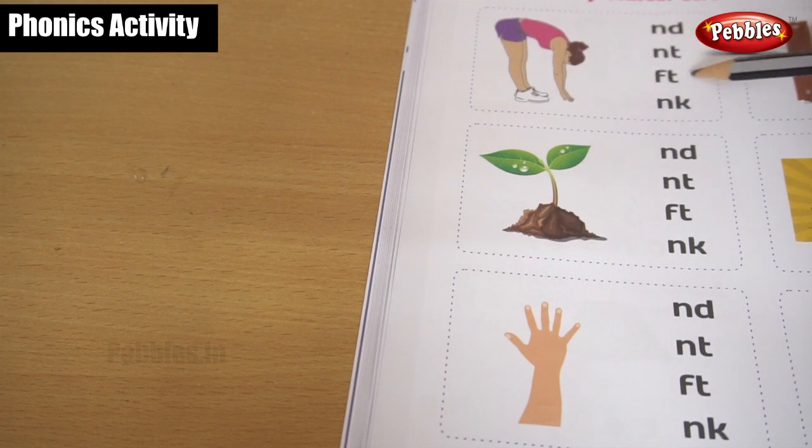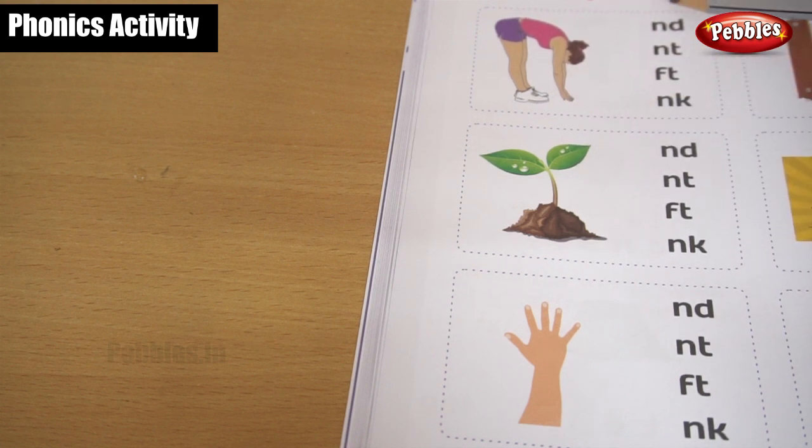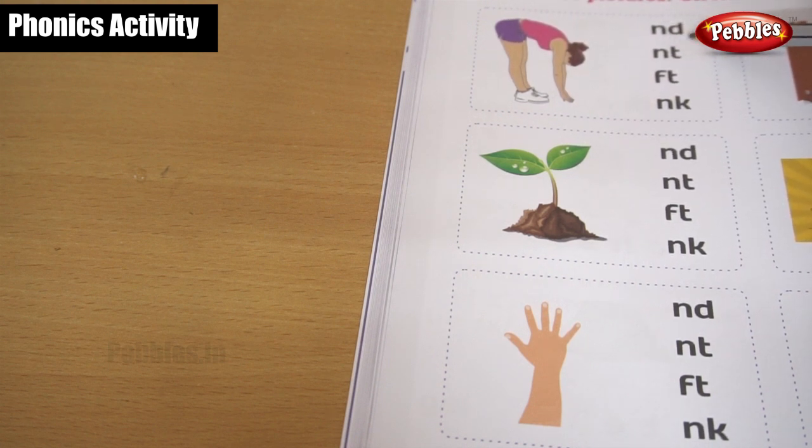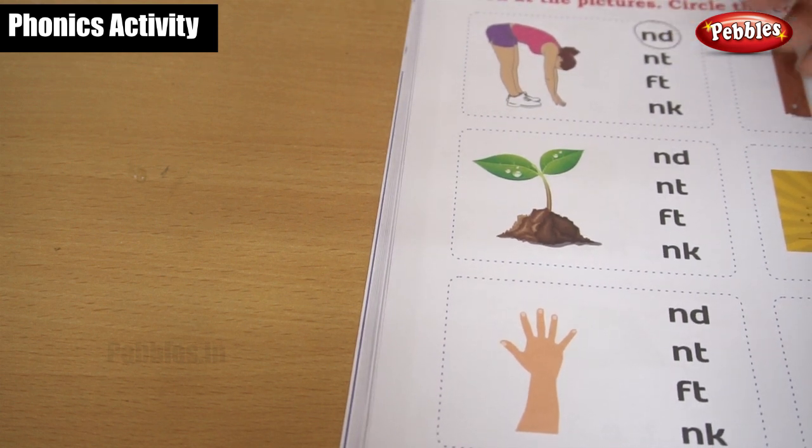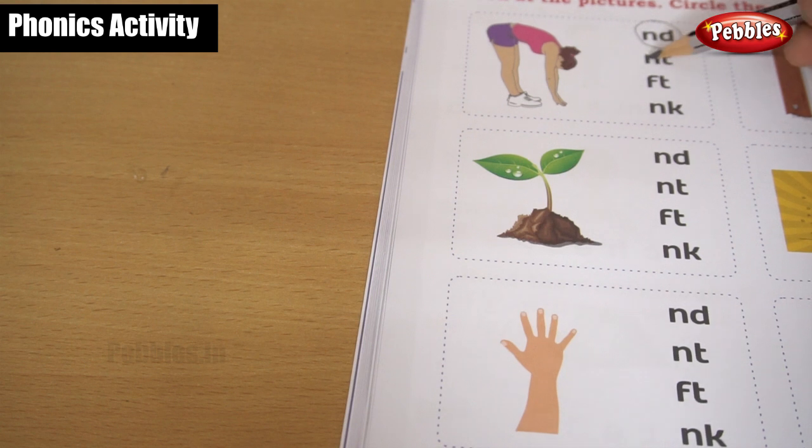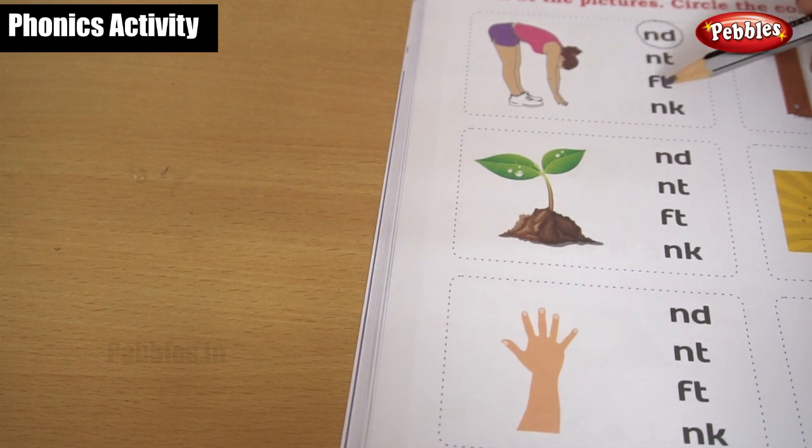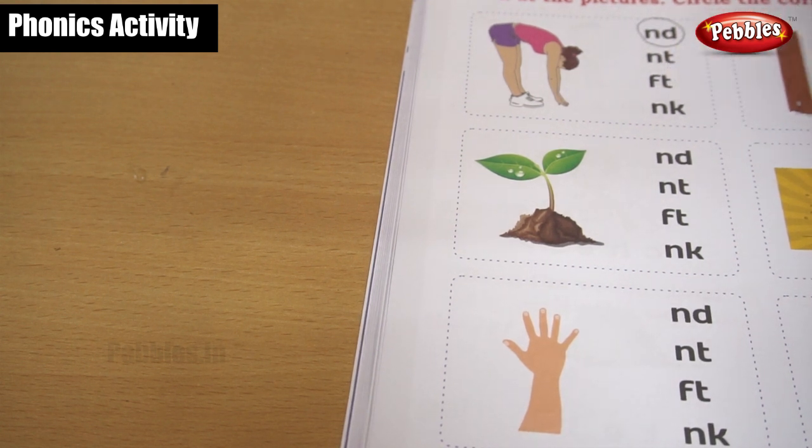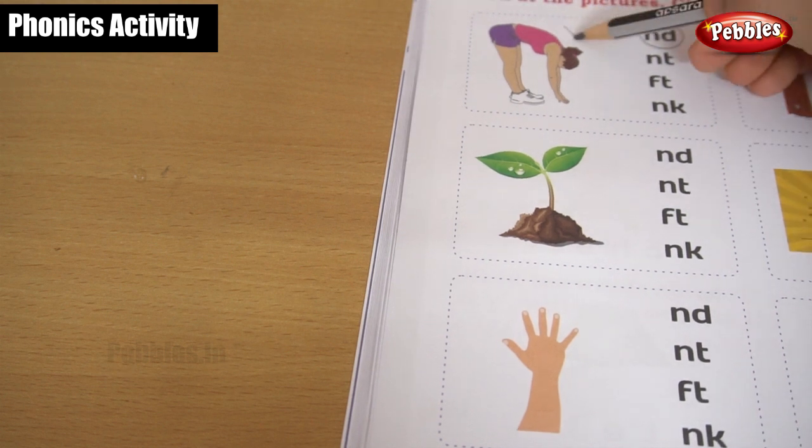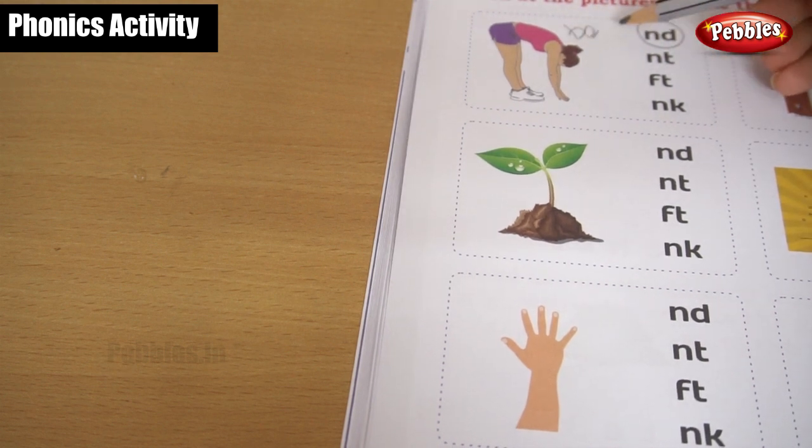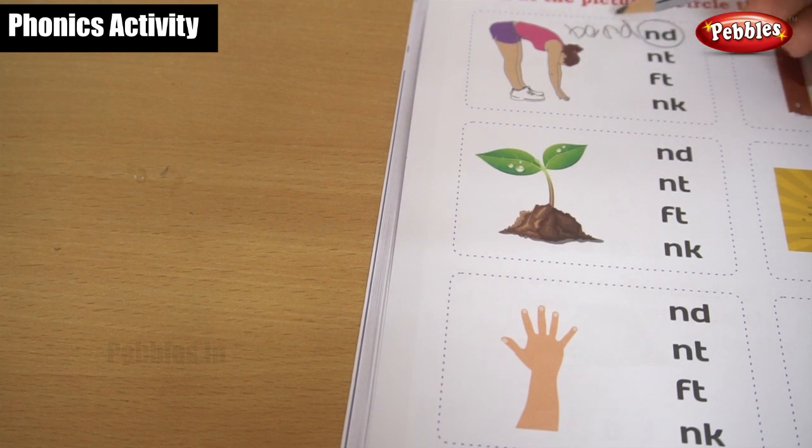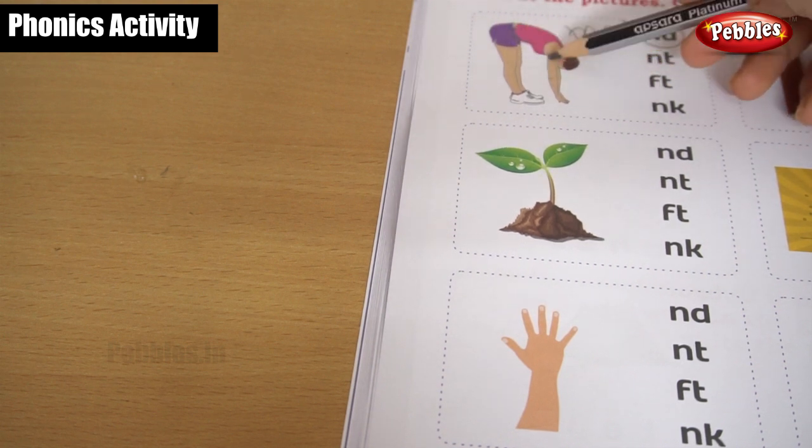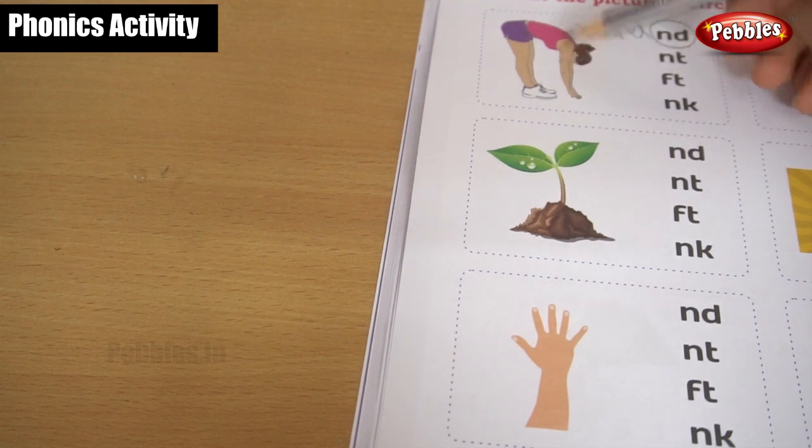Not bent or fend or benk. The bend, end, end. Okay, we want to circle the N-D, bend. Okay, not N-T or not F-T or not N-K. Bend, B-E-N-D, bend. Okay, B-E-N-D, bend. She is bended. Okay, she is bent. Bend, bend.